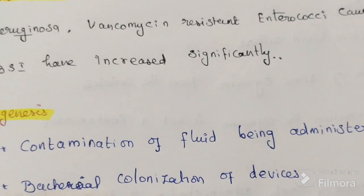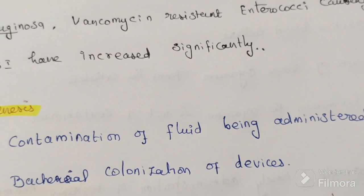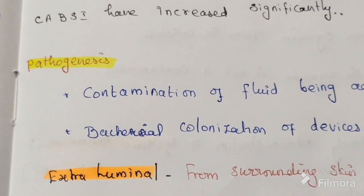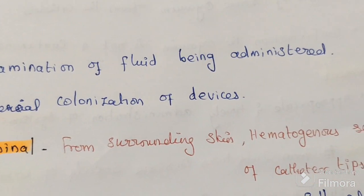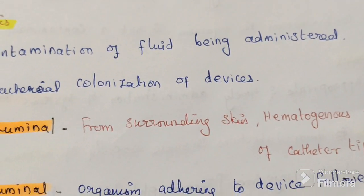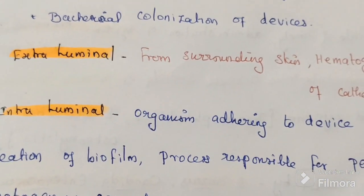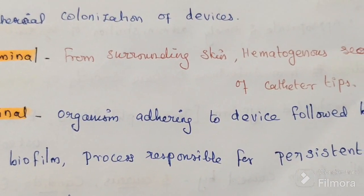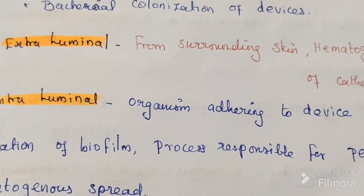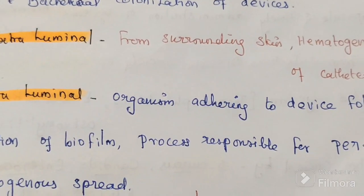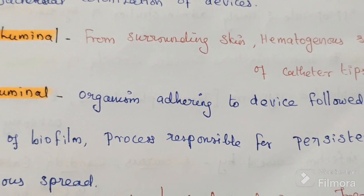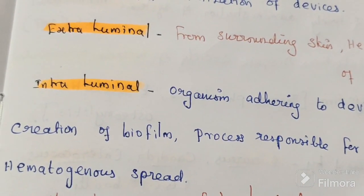Pathogenesis involves: contamination of fluids being administered, bacterial colonization of the device, extraluminal spread from surrounding skin, hematogenous seeding of catheter tips, and intraluminal spread caused by organisms adhering to the device. This is followed by creation of biofilm formation, which is responsible for persistent infection or hematogenous spread.